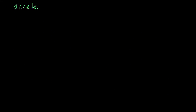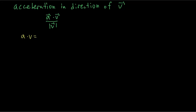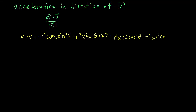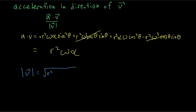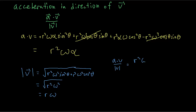Now let's find the tangential acceleration, which is in the direction of velocity. We do the exact same thing but with velocity: take the dot product of acceleration and velocity, simplify the expression, and divide by the magnitude of the velocity. We get the result: radius times α.